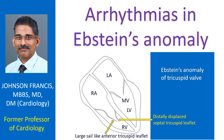Cardiac arrhythmias are common in Epstein's anomaly of the tricuspid valve. Accessory pathways located along the abnormal tricuspid valve are the most important cause of arrhythmias associated with Epstein's anomaly. Accessory pathways are muscle bundles extending from the atrial myocardium to the ventricular myocardium across the annulus fibrosis, and may be seen in about one-third of patients with Epstein's anomaly.